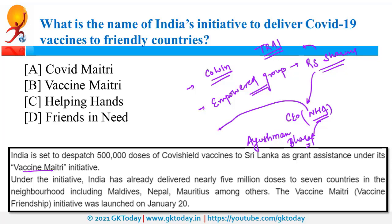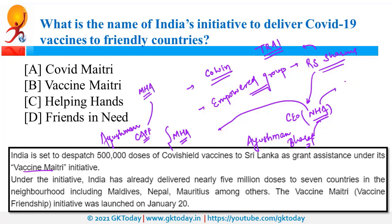NHA, in collaboration with MHA — Ministry of Home Affairs — launched Ayushman CAPF. This is a separate health scheme for the personnel of the Central Armed Police Forces. CAPF are under the Ministry of Home Affairs. NHA is also the implementing authority of the National Digital Health Mission.